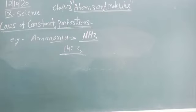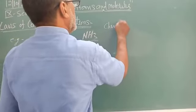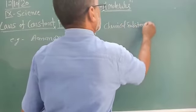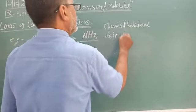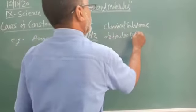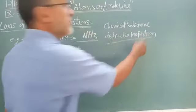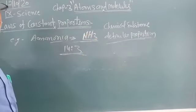For a chemical substance, elements are always present in definite proportions. For example, in ammonia NH3, one nitrogen and three hydrogens have atomic masses in the ratio 14:3. This is the law of constant proportions.